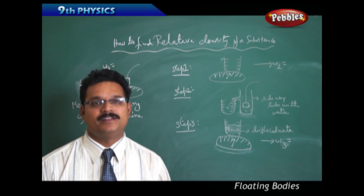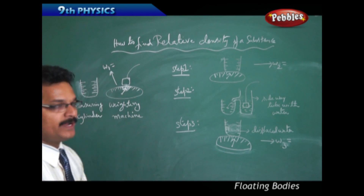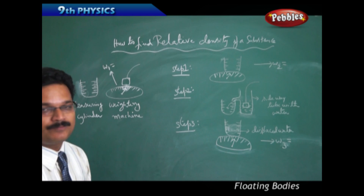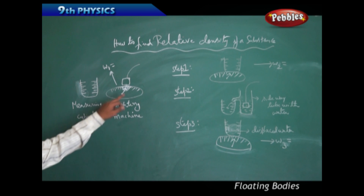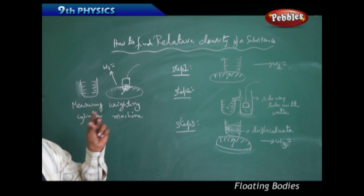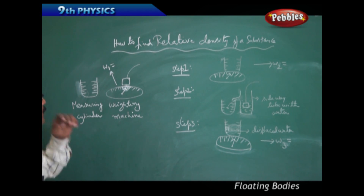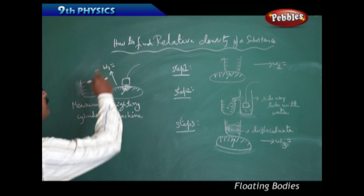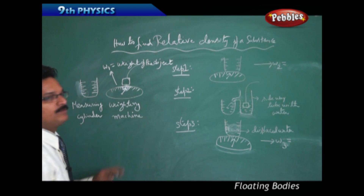Now let's look at how to find relative density practically. See the board here. The first method uses a measuring cylinder — a cylinder where you can pour any liquid to know its volume. We take water in it. We also have a weighing machine. Suppose we have a small rectangular iron block — any metal block. That block is placed on the weighing machine, which immediately shows its weight. W1 is the weight of the object.